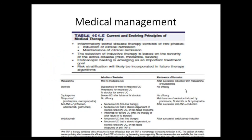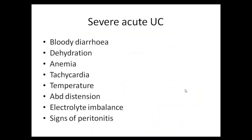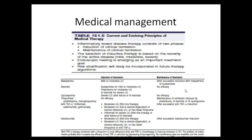The main goals of medical management of ulcerative colitis are three things: first, to subside the acute episode; second, to maintain remission after control of the acute episode; and third, to prevent relapse.